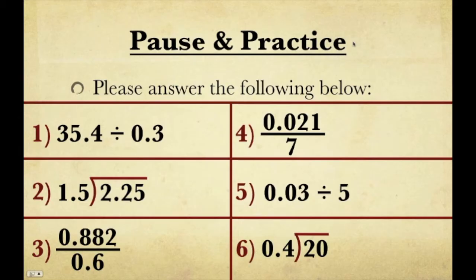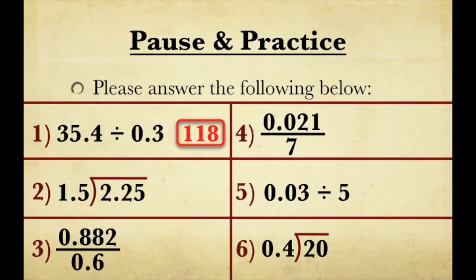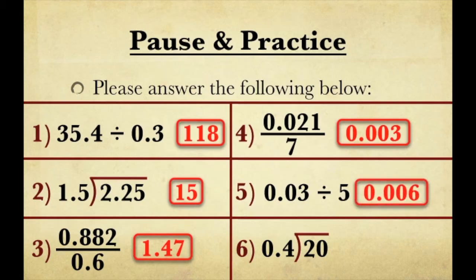Here's your pause and practice — pause the video, and when you're done, unpause. After a 3, 2, 1 countdown, your answer will be displayed. The answers are: Number 1 is 118. Number 2 is 15. Number 3 is 1.47. Number 4 is 0.003. Number 5 is 0.006. And number 6 is 50.